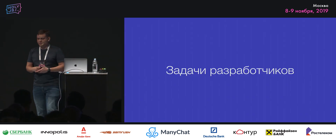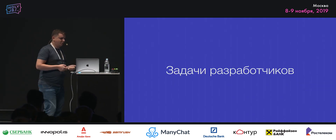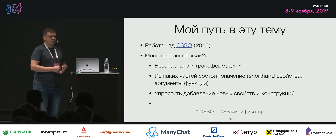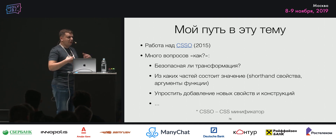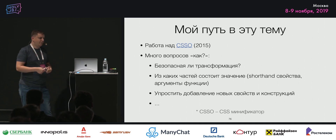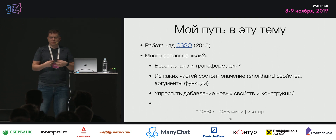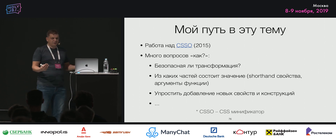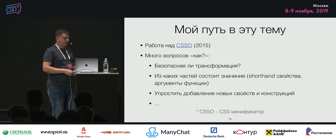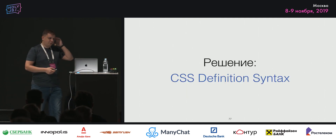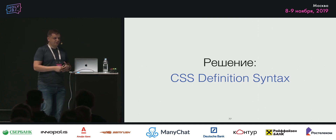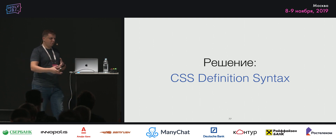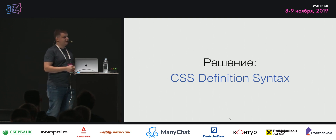Что сейчас мы можем получить в повседневных задачах? Почему я начал об этом задумываться? Ещё 4 года назад я работал над CSSO и понял, что чтобы делать минификацию CSS более корректно и сложно, нужно понимать, как устроен CSS — не я понимаю, а чтобы машина могла понять, делать безопасные трансформации, понимать, из чего состоит сложное значение, вроде background. Когда я искал, как это сделать, не написав миллион строк кода, пришёл к тому, что у нас есть CSS definition syntax, и все свойства описаны в нём.